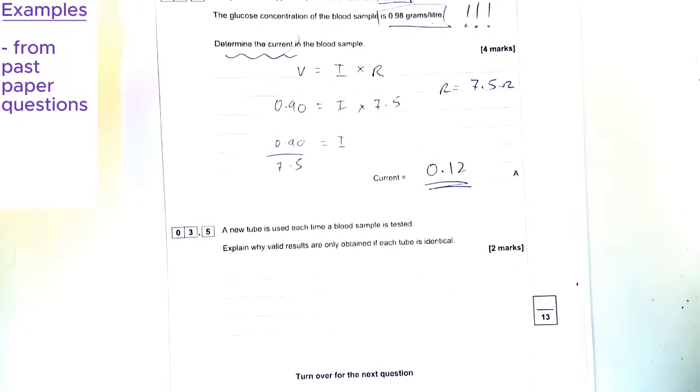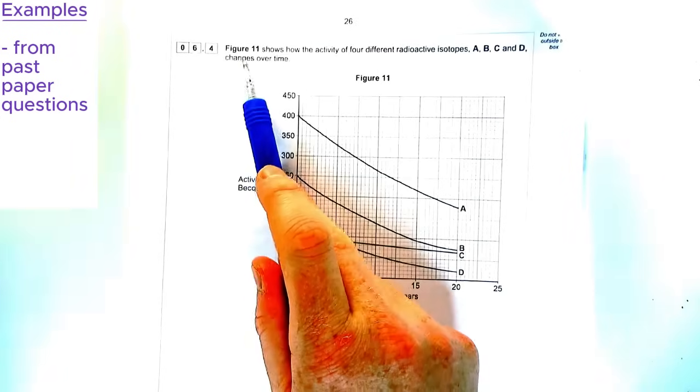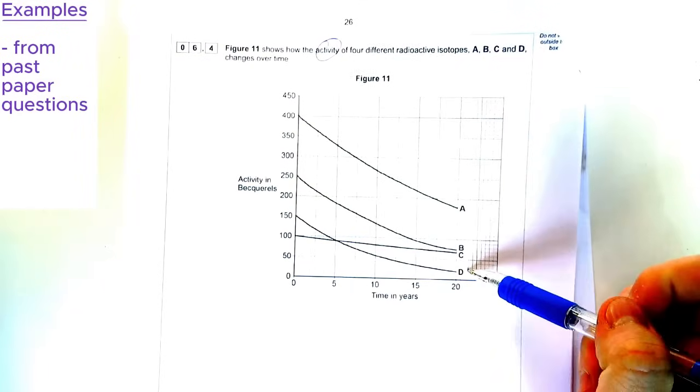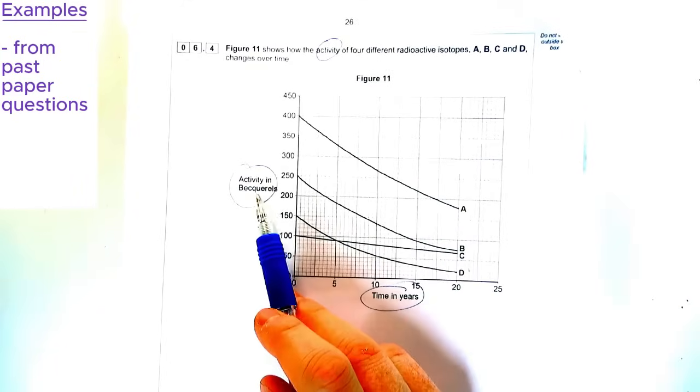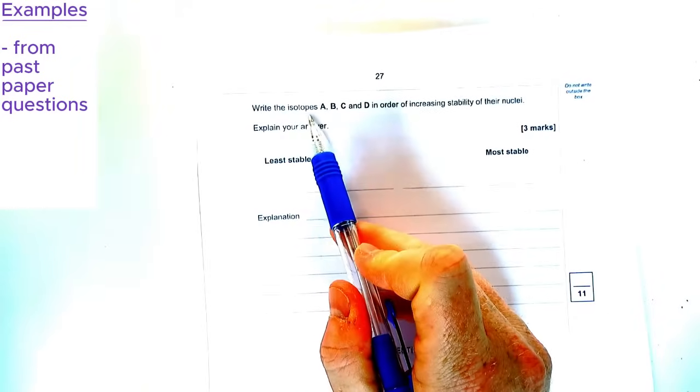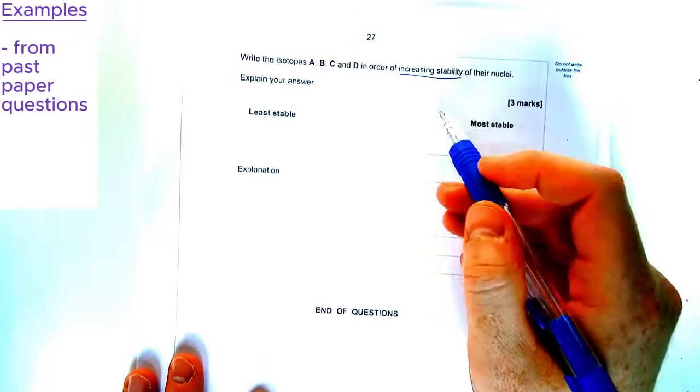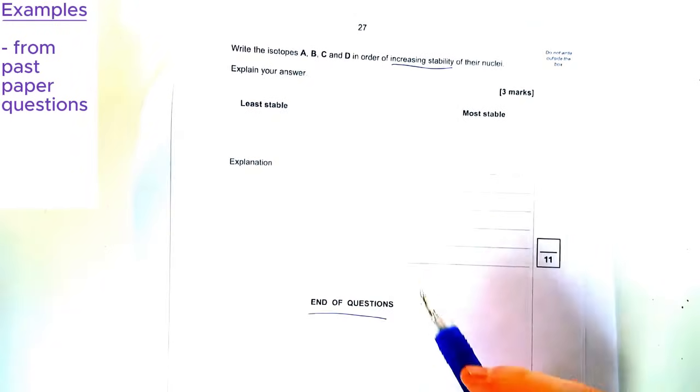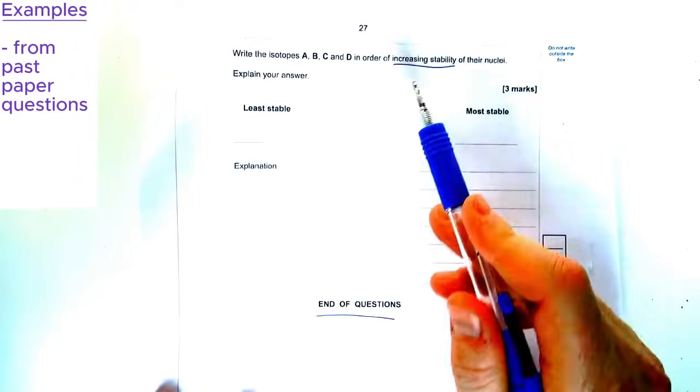We've got another question about radioactivity here, and the graph shows, it says, figure 11 shows how the activity of four different radioactive isotopes, A, B, C, and D, changes over time. We've got time on the x-axis, activity on the y-axis. The question says, write the isotopes, so the four isotopes, in order of increasing stability of their nuclei, and then explain your answer. Now, this question was really poorly answered in the GCSE, probably because it was the end of the paper, and people were a bit tired by that point. But if you just keep a bit of awareness about what the graph is similar to, you'll be able to answer this question a lot better than you might think.